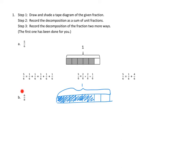Now we need to express our fraction, 6 eighths, in terms of unit fractions. That just means adding up all of the units we've got. This time we're working in eighths, so that's the same as 1 eighth plus 1 more eighth plus 1 more eighth — and we need to do this 6 times. That's 1, 2, 3, 4, 5, 6 eighths. Awesome.